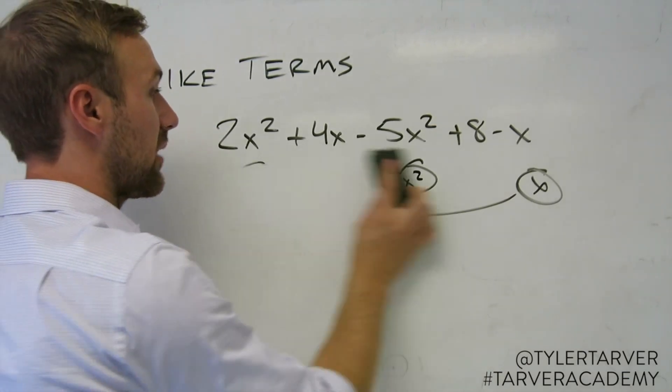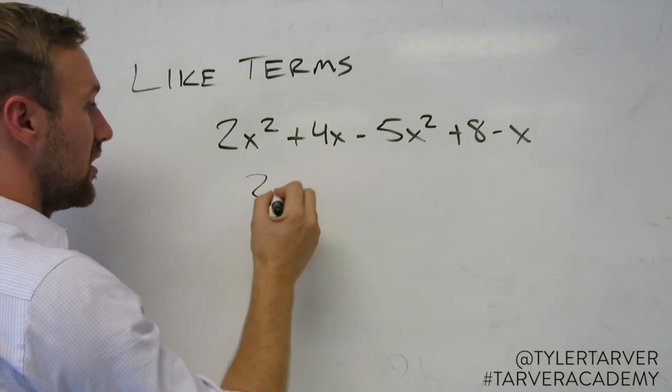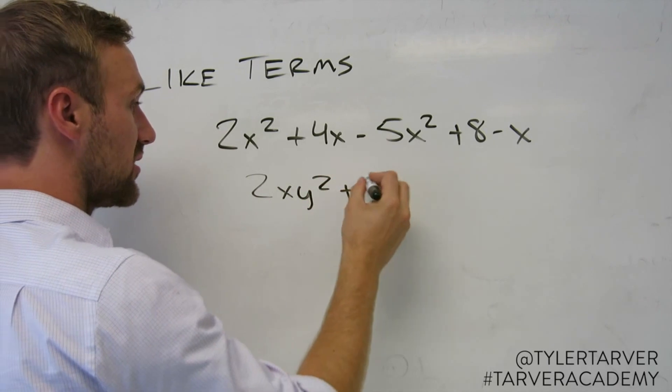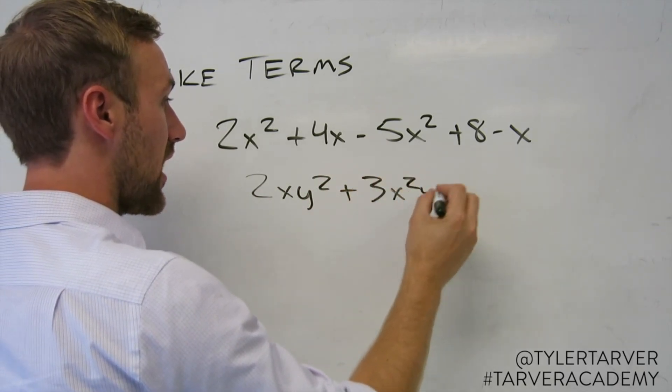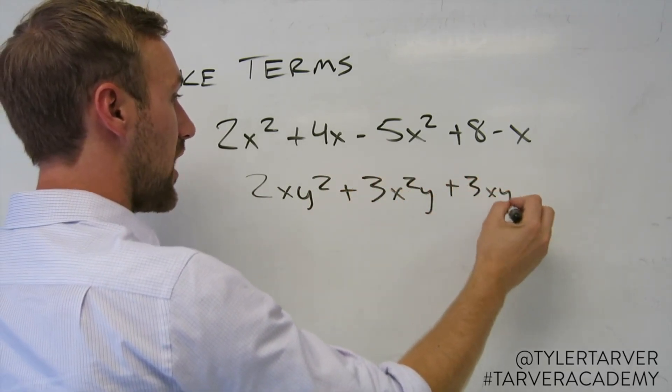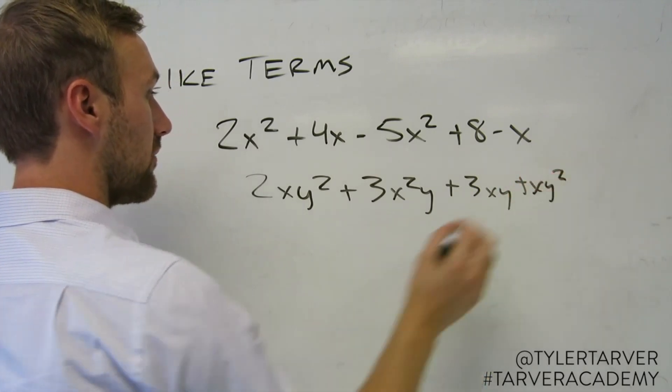Another way, like a more advanced version of that, will be like 2xy squared plus 3x squared y plus 3xy plus xy squared.